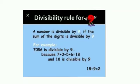Divisibility rule for 9: a number is divisible by 9 if the sum of its digits is divisible by 9. Example: 7,056 — 7 plus 0 plus 5 plus 6 equals 18. Since 18 is divisible by 9, therefore 7,056 is also divisible by 9.